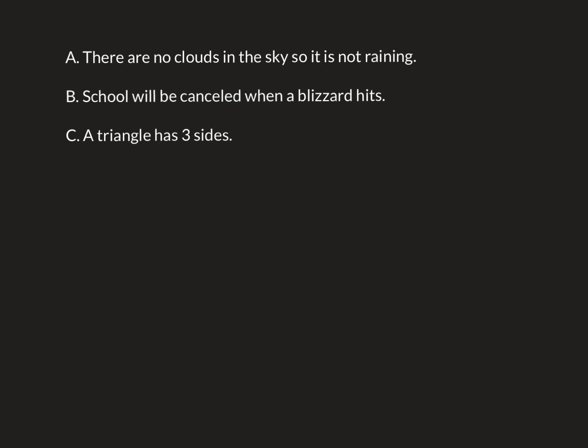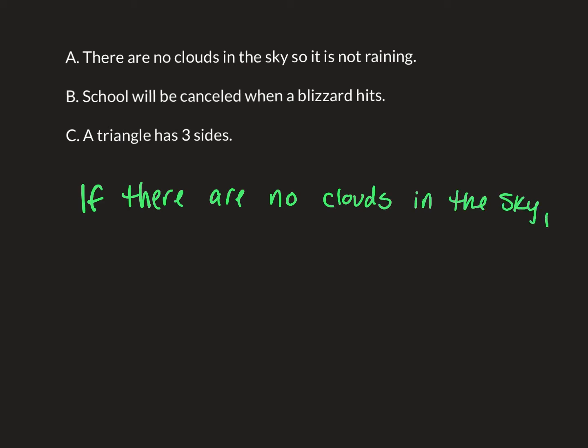Let's take these statements and write them as a conditional statement in if-then form. Starting with a: it says there are no clouds in the sky, so it is not raining. To write that as an if-then statement, we would say: if there are no clouds in the sky, then it is not raining.